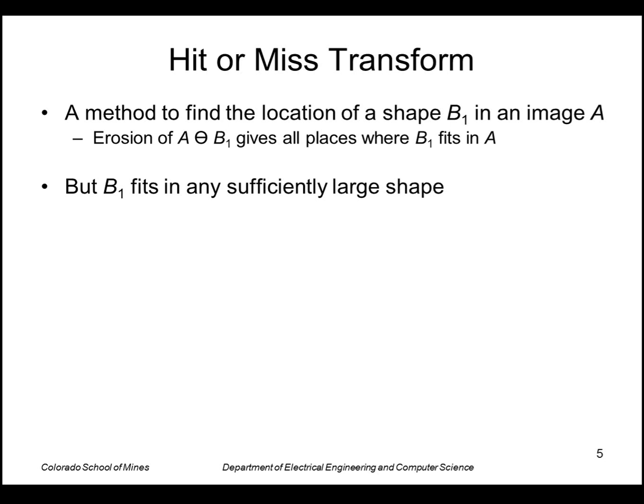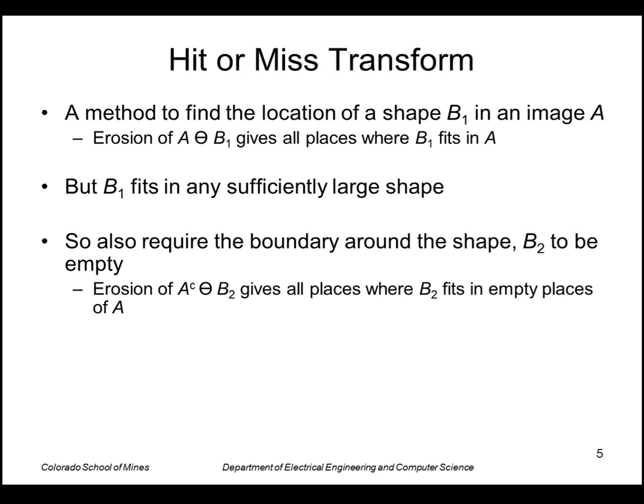If I have a large region A, then any shape will fit inside that. We need a way to distinguish between just very large regions fitting by accident and the exact shape we're looking for. The way we do that is we define a boundary around the shape to be empty, call that B2.